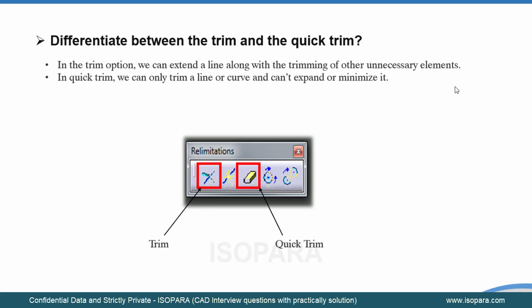The next question is: differentiate between Trim and Quick Trim. In the Trim option, you can extend a line along with trimming other unnecessary elements. With Quick Trim, you can only trim a line or curve and cannot expand or minimize it. I will show you this through a live example.